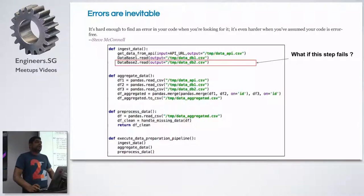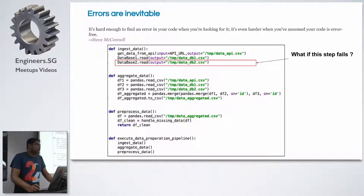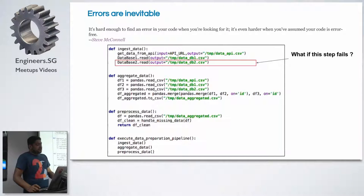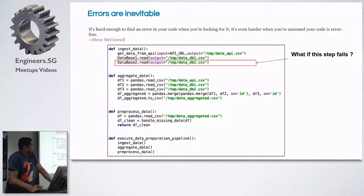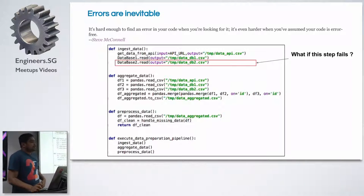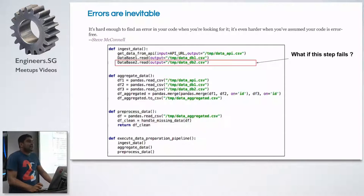The problem we face is we're bound to have errors — many kinds of issues. Your DB server goes down, or a third-party API suddenly makes some deprecation or change and everything starts failing. So if the database two read part fails, you've already done the API read and the DB1 read. Now you have to run the whole thing again — the API reading, the DB1 read — everything repeats.